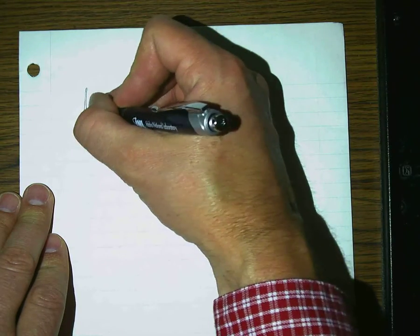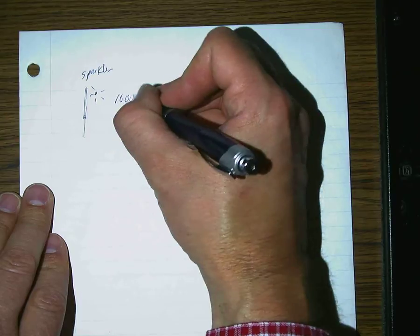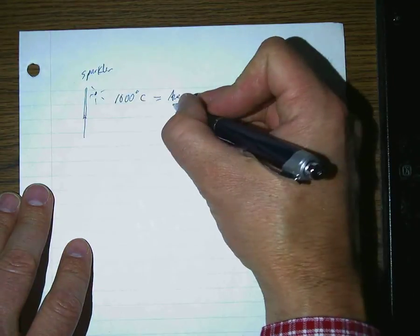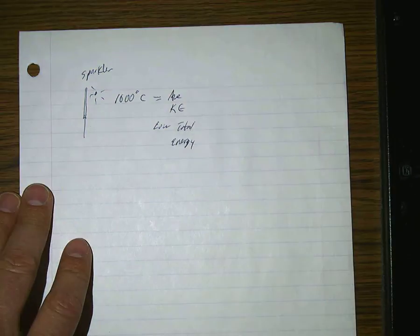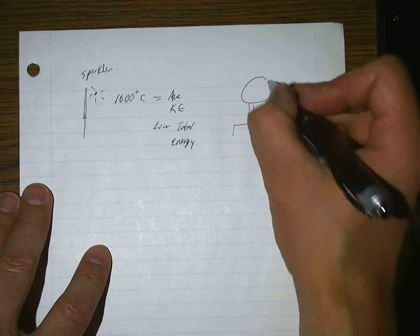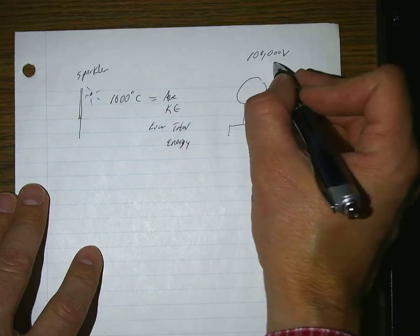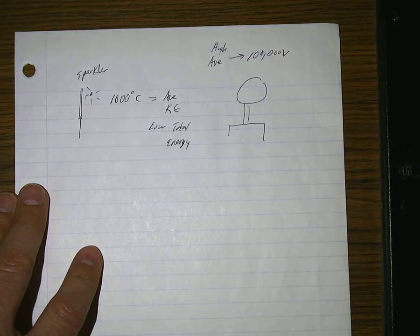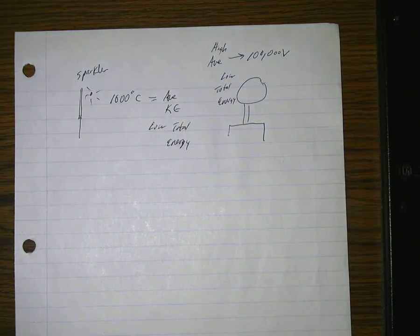Why doesn't a sparkler burn you, since a spark from it is like a thousand degrees Celsius — hot enough to burn? The idea was it had a high average kinetic energy, but a low total energy. There weren't very many molecules in that spark, so there was a low total energy but a high average energy. Just like when we had the Van de Graaff generator out and you were able to touch it, even though it had over 100,000 volts — a very high average energy per charge. But it didn't have very many charges; only a small number of electrons actually transferred to your body, so it had a low total energy.